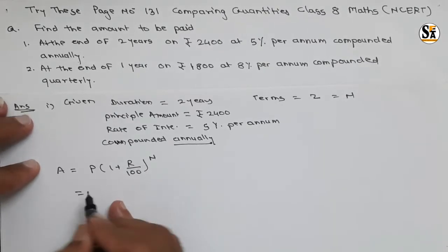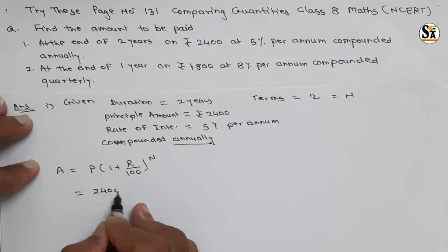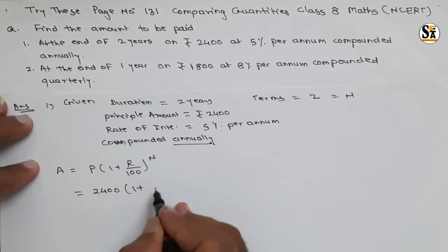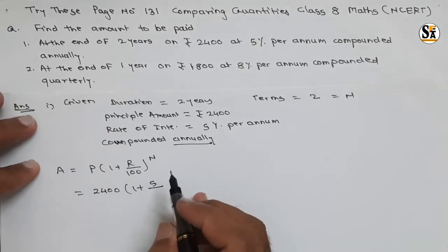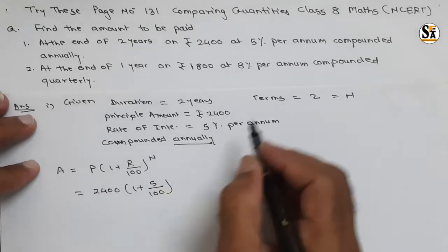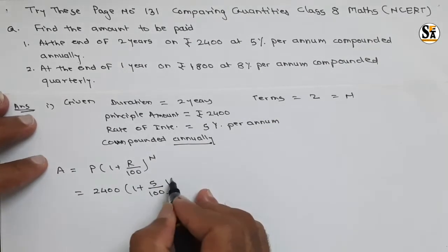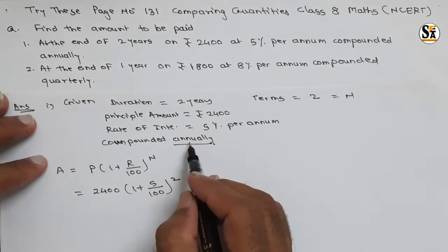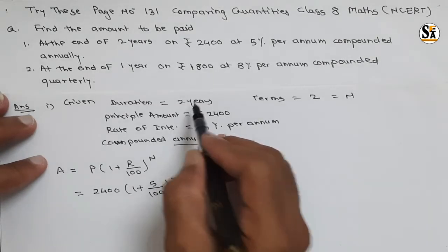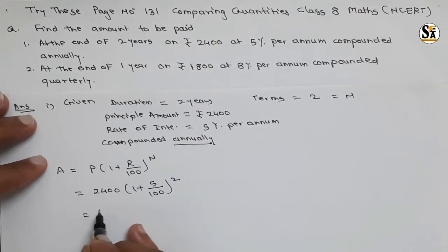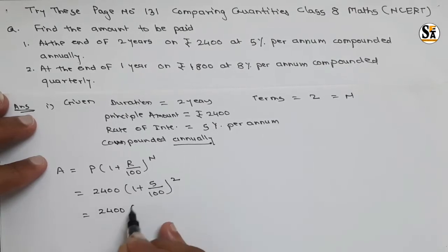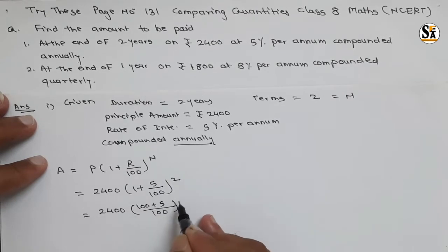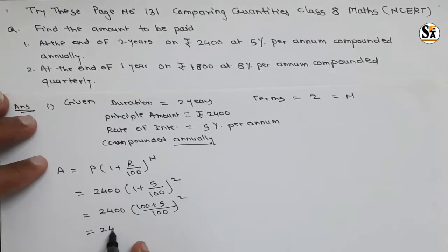Here P is the principal amount, so write 2400. One plus rate of interest five divided by 100, and n, the number of terms, is two - because the duration is two years and compounded annually means one term per year. So: 2400 × (100 + 5)/100 raised to 2, which gives 2400 × (105/100)².